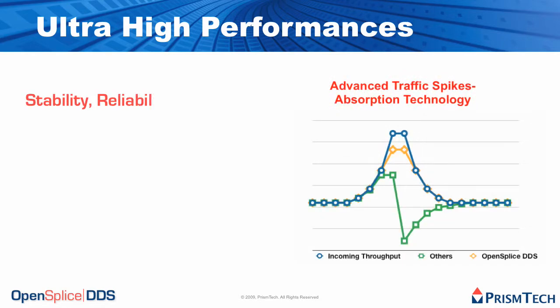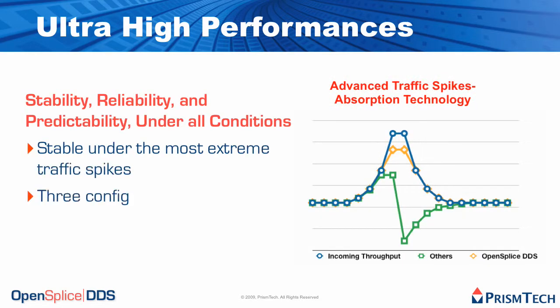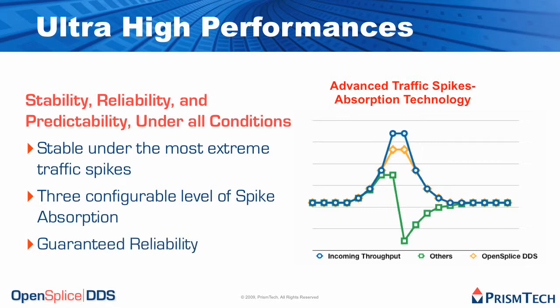Another aspect which is quite unique about OpenSplice DDS is the level of stability, reliability, and predictability it provides under all conditions, regardless of the level of overload that you might experience. There are 3 different levels of configurable spike absorption, some of which operate at the networking level, others of which operate as services you can deploy throughout your network to absorb spikes while maintaining the frequency of publication at your publisher constant, even in the presence of unresponsive subscribers — all without losing reliability or performance on your publishing side.